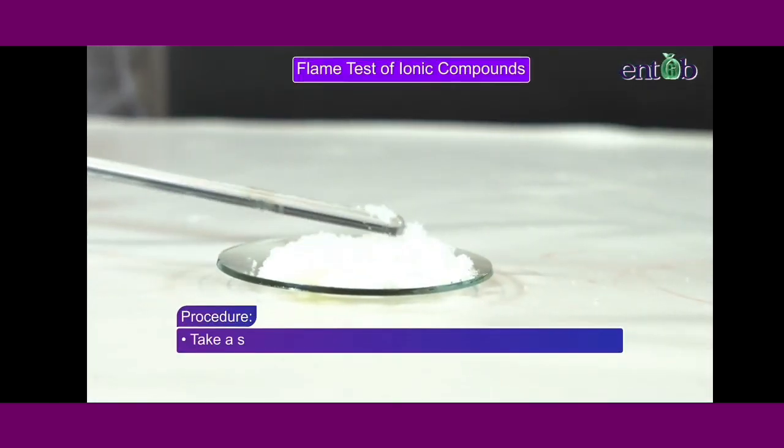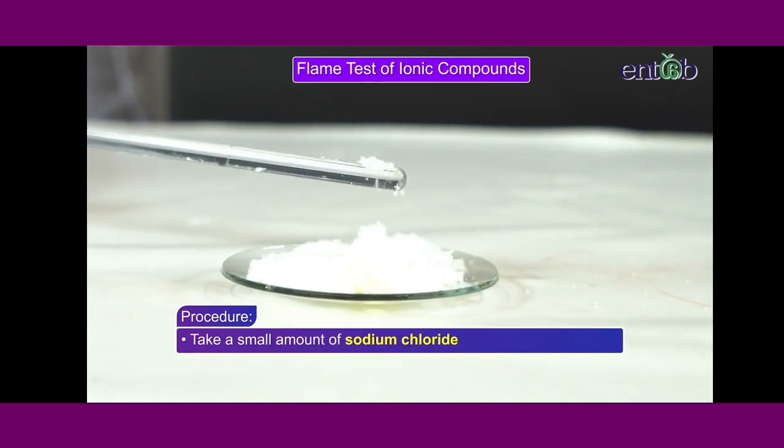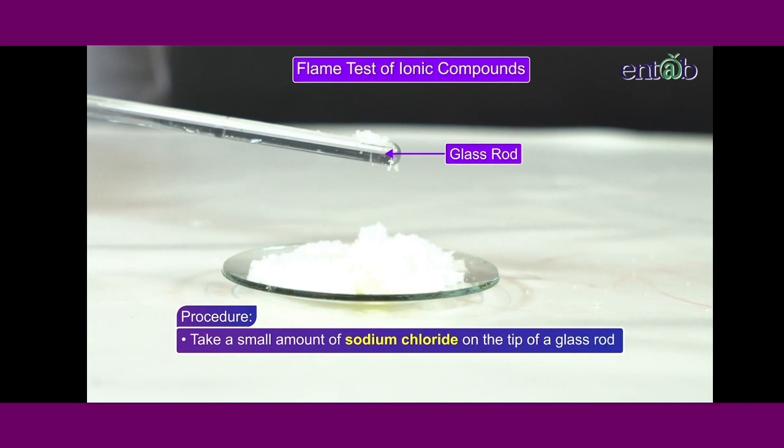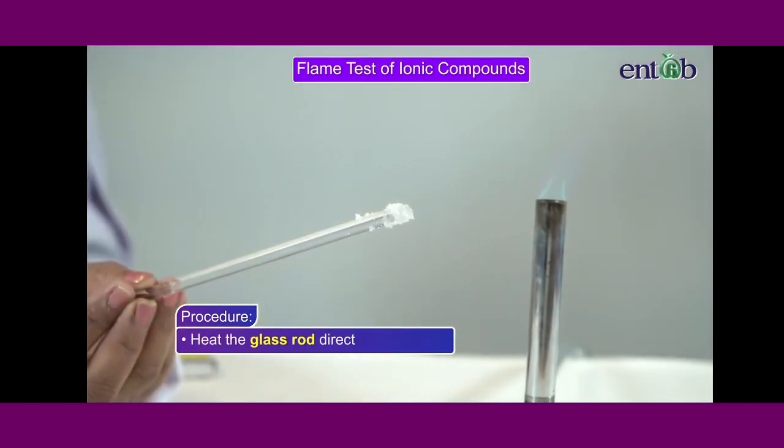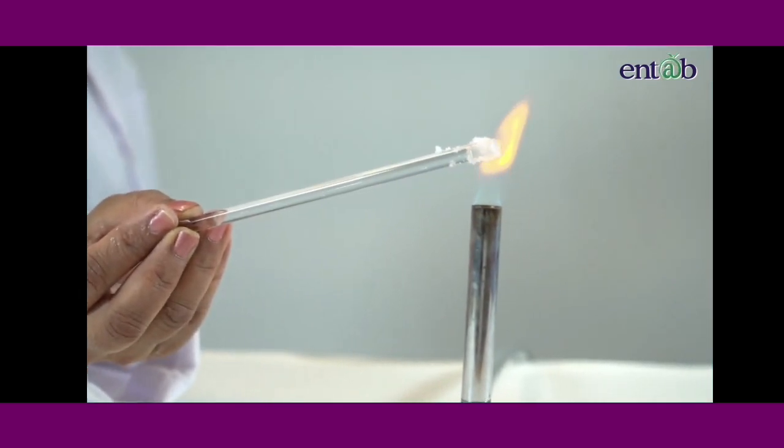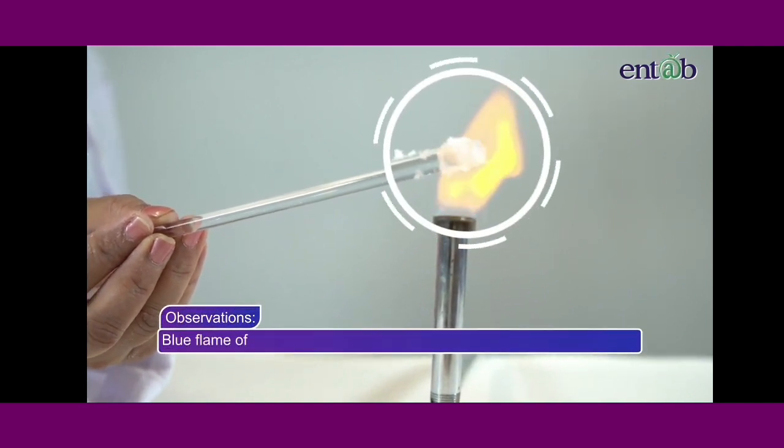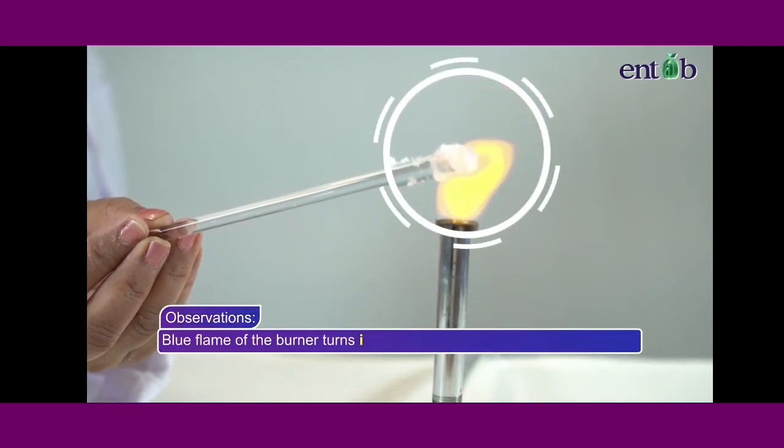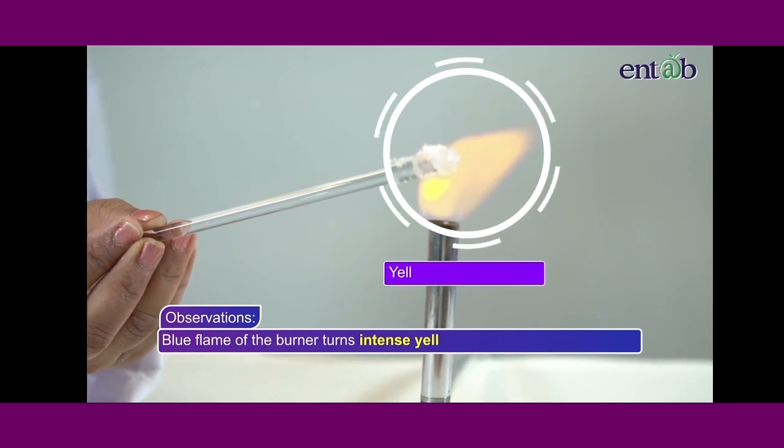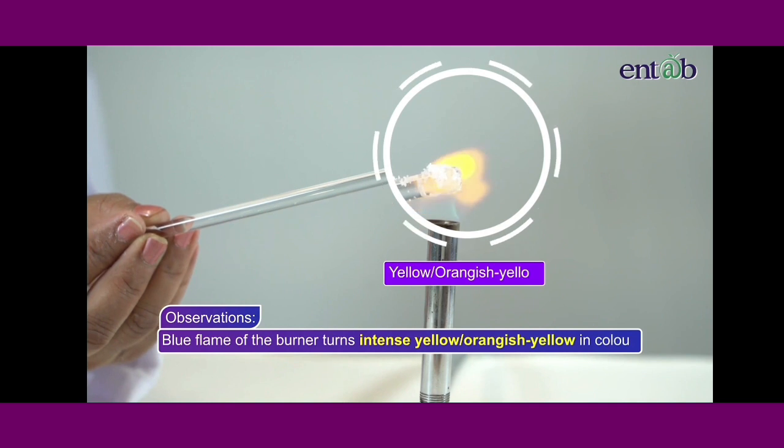Let us take a small amount of sodium chloride on the tip of a glass rod and heat it directly in the flame. Observe carefully. When the flame is observed carefully, it can be noted that the blue flame of the burner turns beautiful intense yellow and sometimes orangish yellow in color.